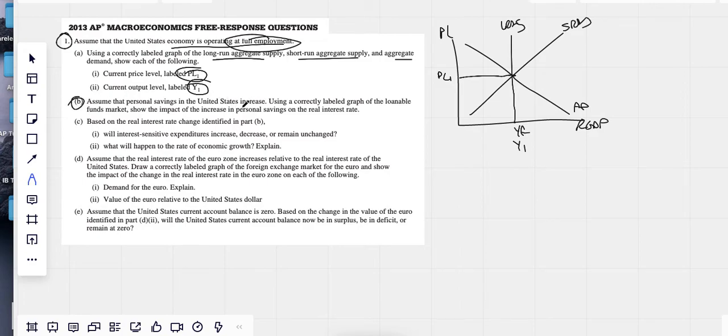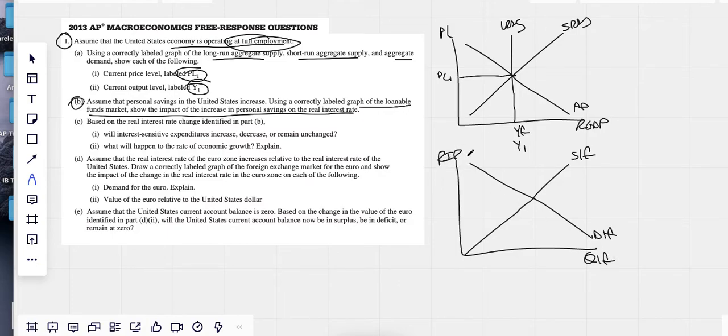Assume personal savings in the U.S. increase. Use a correctly labeled graph. The loanable funds market showed the impact of an increase in real savings. So loanable funds is just a supply of loanable funds, demand for loanable funds, quantity of loanable funds, real interest rate.